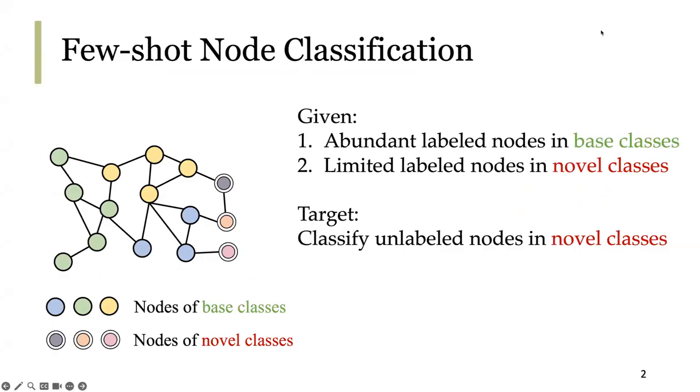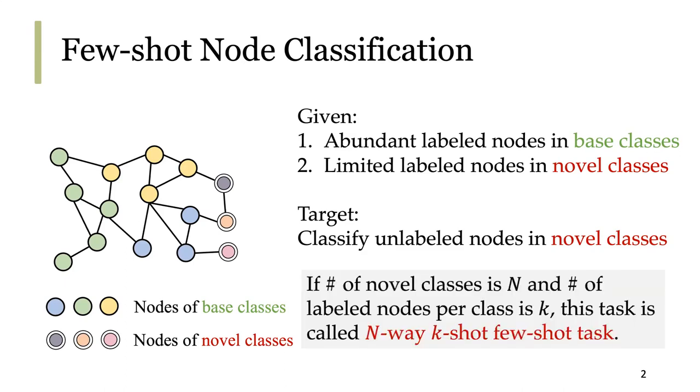The problem is we have abundant labeled nodes in base classes and limited labeled nodes in novel classes. The target is to classify unlabeled nodes from novel classes. If we have n novel classes and each of them has k labeled samples, we call this task an n-way k-shot task.